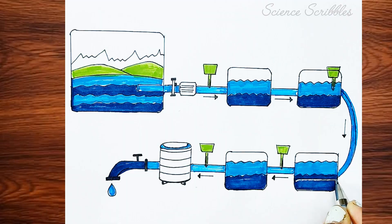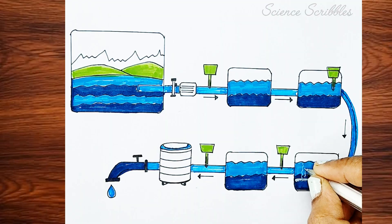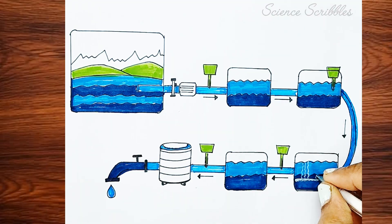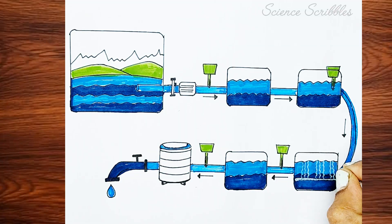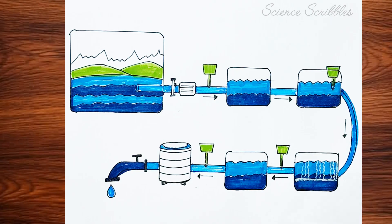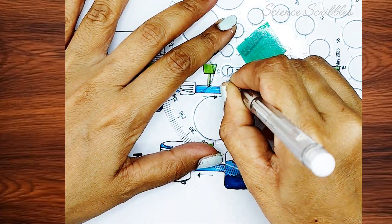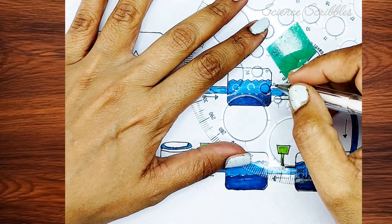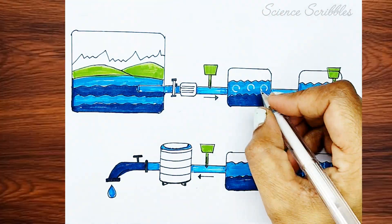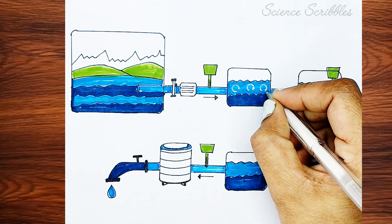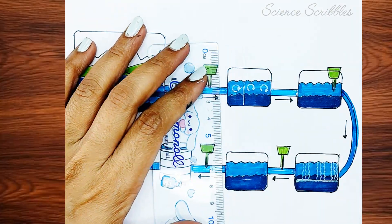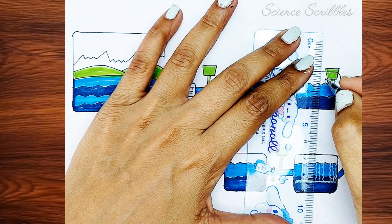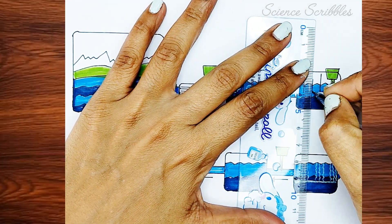For the filtration process, I am using a white gel pen to add wavy lines inside the filtration rectangle. This helps indicate the movement of water through the filtration stage. Additionally, I am using the same white pen to mark the coagulation process inside the first rectangle. Next is the polymer stage. I am adding arrow marks inside the polymer section.